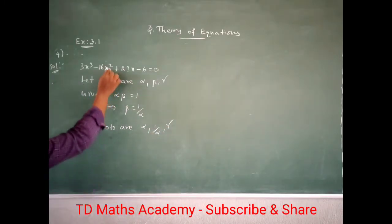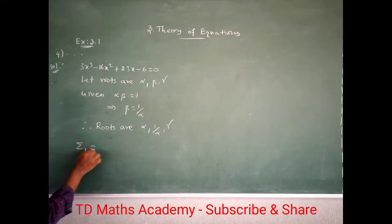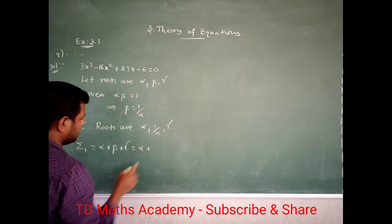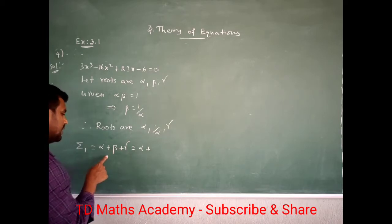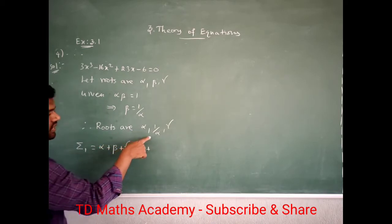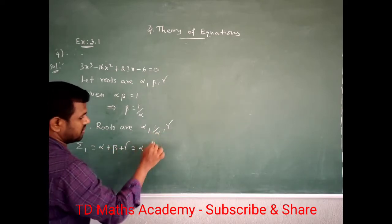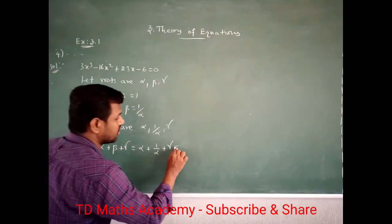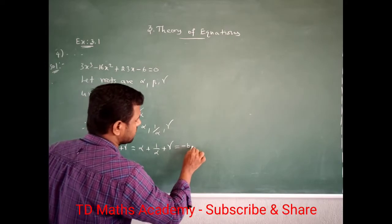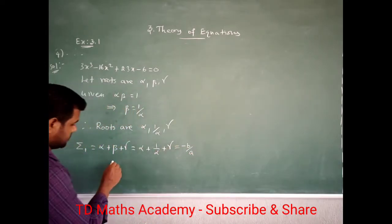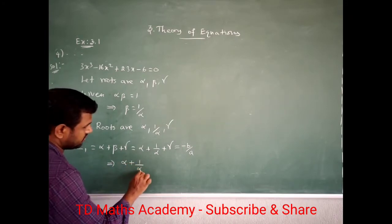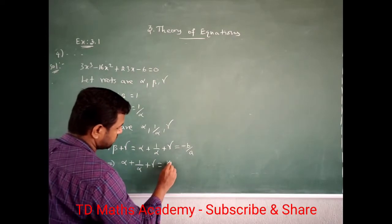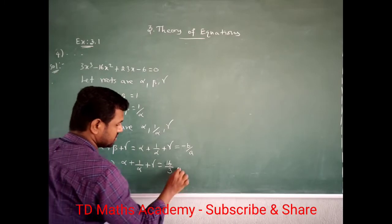It is easy to find out. The summation formula 1 for a 3-roots equation is alpha plus beta plus gamma. In this case, substituting beta as 1 by alpha, you can write alpha plus 1 by alpha plus gamma. This equals minus B by A. B is minus 16, so minus minus gives plus 16 by A, where A is 3. So this gives 16 by 3. I am taking this as equation 1.